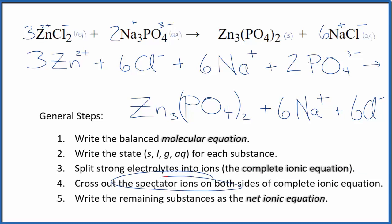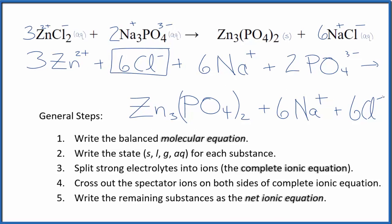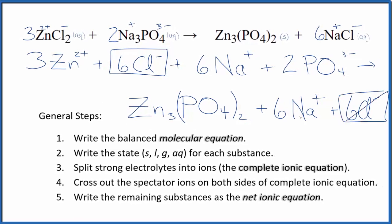Now we can cross out the spectator ions. They're on both sides. I can see I have six chloride ions here in the reactants, and then in the products, I have six chloride ions. I'm going to cross those out.